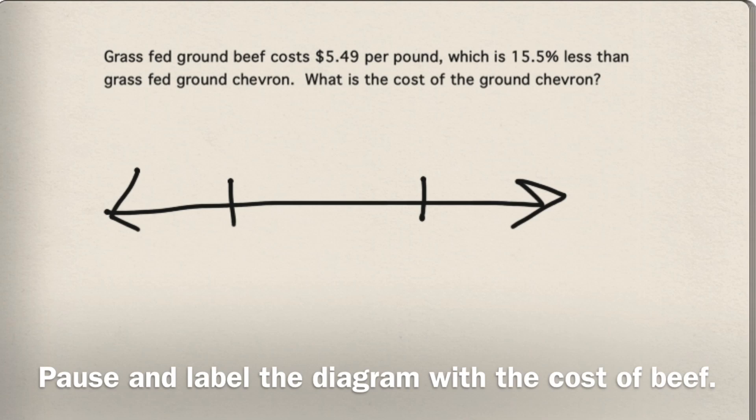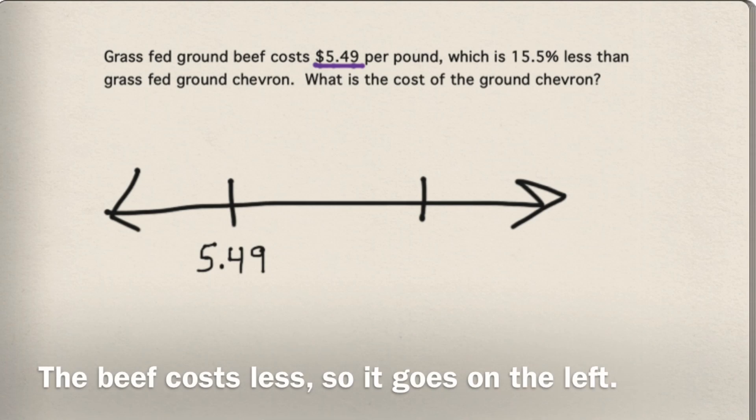Pause and label the diagram with the cost of beef. The beef costs less, so it goes on the left.